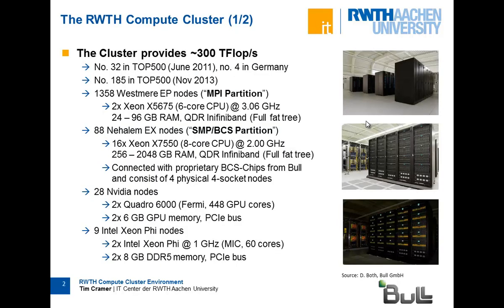First, a brief overview of the hardware. Christian already mentioned a lot of these things so I can go through it relatively fast. The Bull installation provides 300 teraflops of compute power. When we got the cluster in 2011, it was ranked number 32 in the Top 500 list of the world's fastest computers, and at that point it was ranked number 4 in Germany. So it's quite a big installation for a university.